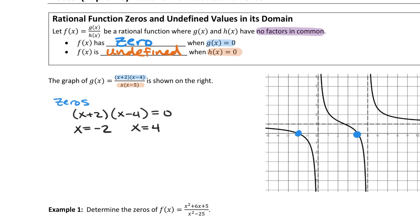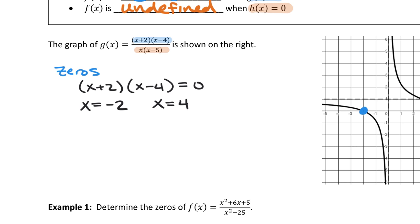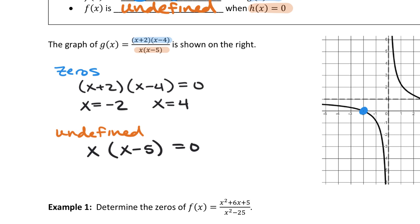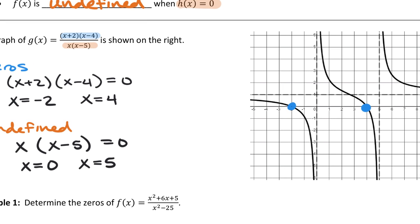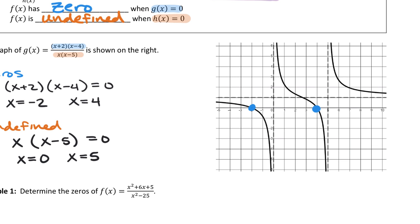Now let's find the undefined values. We cannot divide by zero — you can't put things into zero groups, it makes no sense. Our undefined values occur where the denominator equals zero. Using the zero product property, the undefined values are at 0 and 5, and on the graph, those correspond to vertical asymptotes.